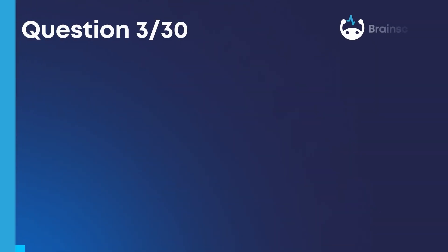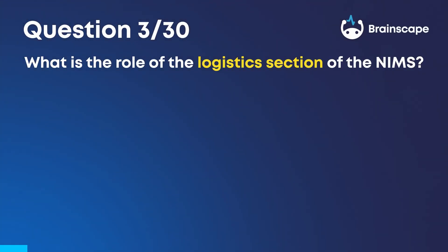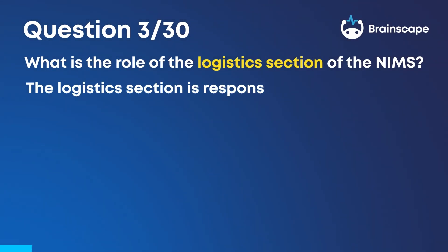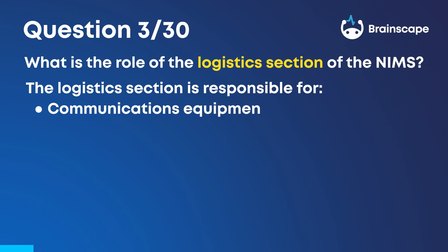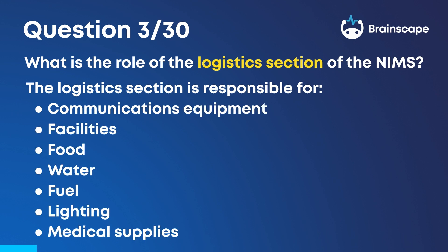Question 3. What is the role of the logistics section of the NIMS? The logistics section is responsible for communications equipment, facilities, food, water, fuel, lighting, medical supplies, and equipment.